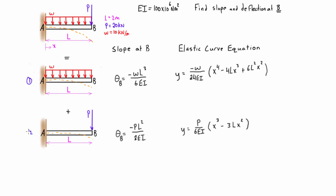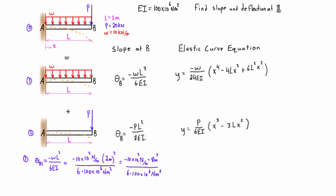Let's call the distributed load case system one, the point load case system two, and the original combined system zero. For the slope at B in system one, we simplify the expression and check units: newtons cancel with newtons, one meter cancels reducing the exponent by one, and meters squared cancels meters squared, leaving units of radians. Plugging into the calculator gives negative 0.000133 radians. The negative sign indicates the angle is going clockwise off the axis — downward.